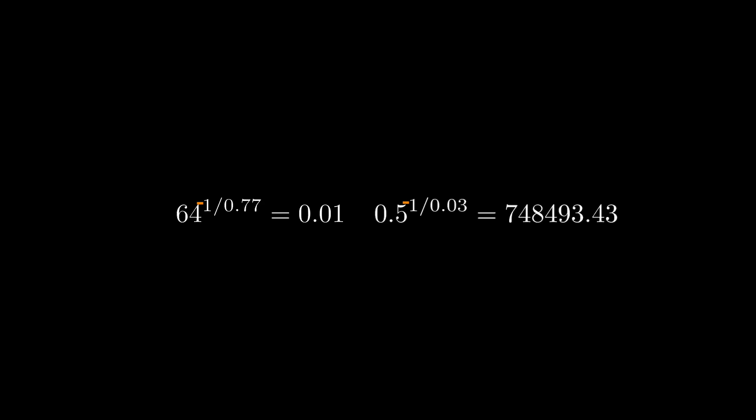The example with the 64 now doesn't go out to infinity, but tends towards 0. And if we're looking at values between 0 and 1, the opposite happens again. Now this is blowing up to infinity.